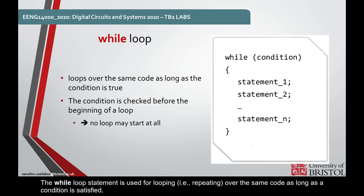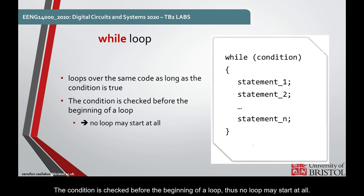The while loop statement is used for looping, this means for repeating over the same code as long as a condition is satisfied. The condition is checked before the beginning of a loop, thus no loop may start at all.